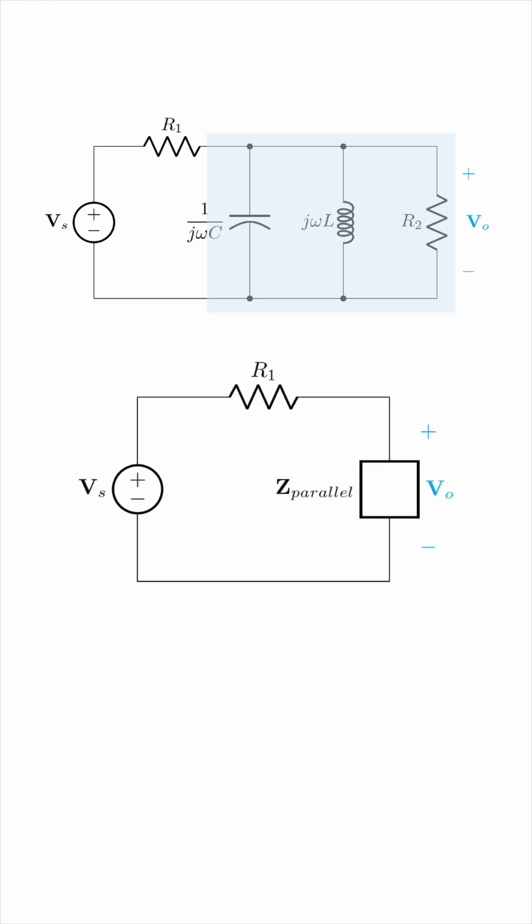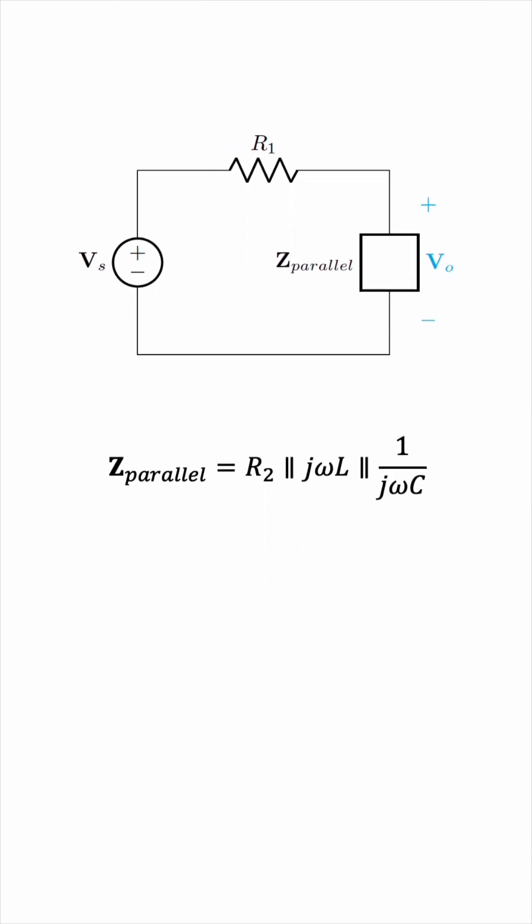We have R2 in parallel with j omega L in parallel with 1 over j omega C. These are not two components only, so we cannot use product over sum. Instead, we have to add the reciprocals.